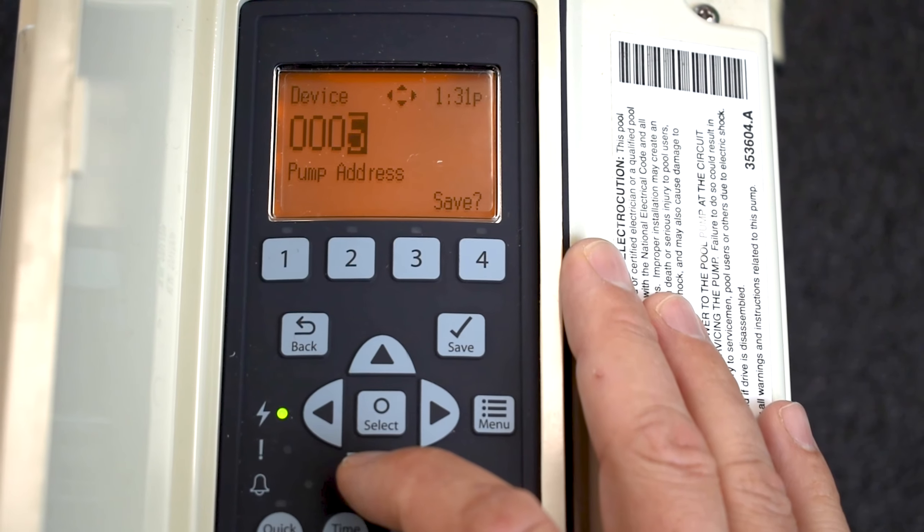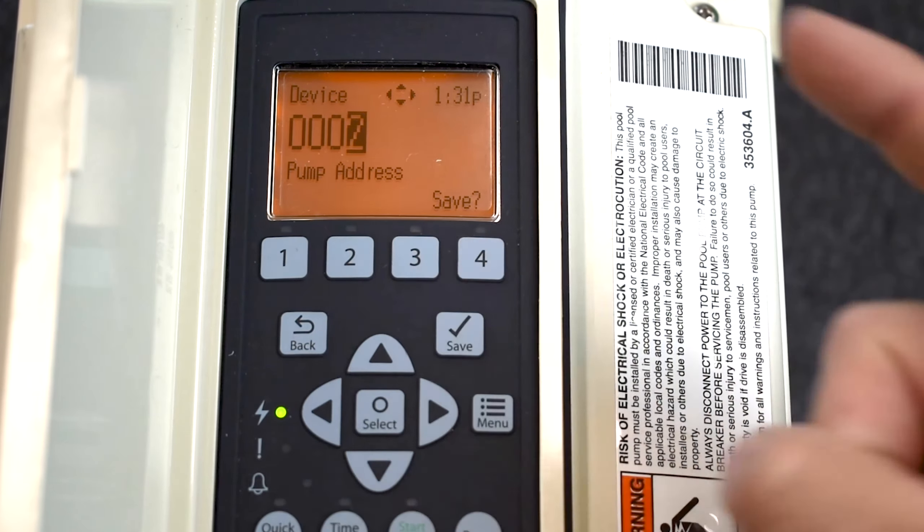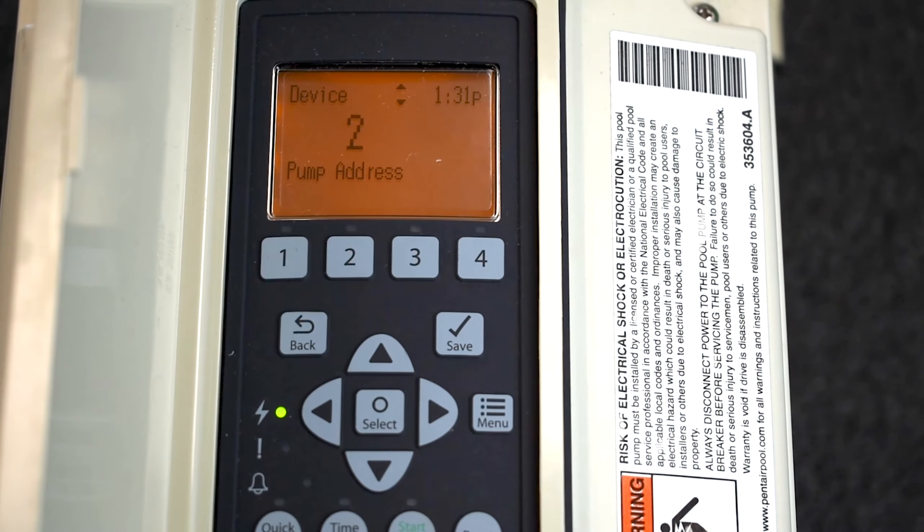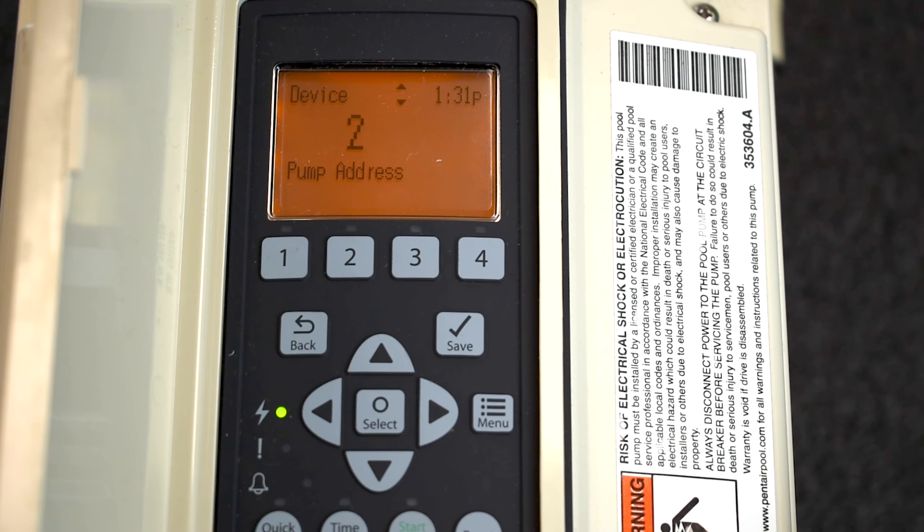So say this is our water feature pump and I want to make this pump number two. So what I'm going to do is click Save. So now I'll have a filtration pump should be one, this would be two.